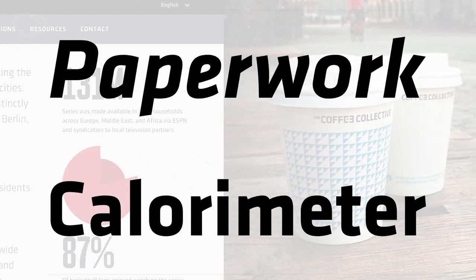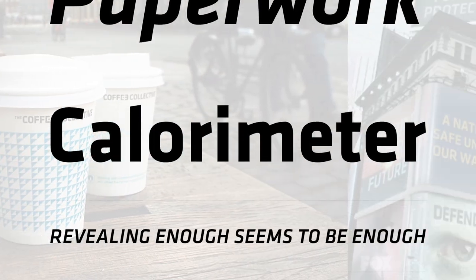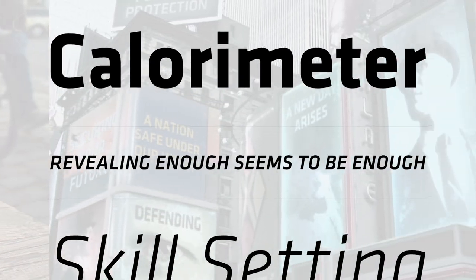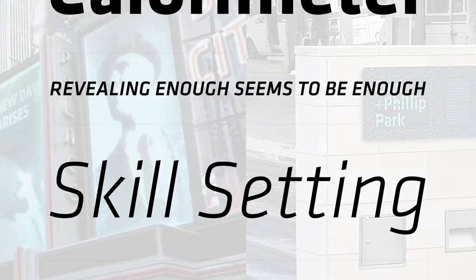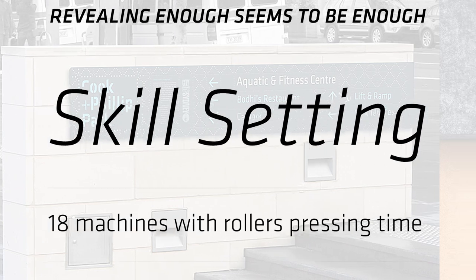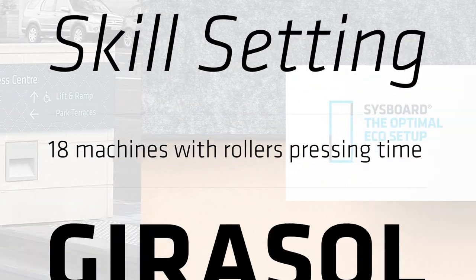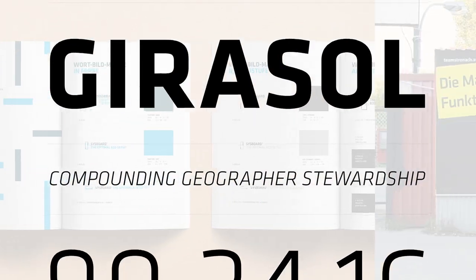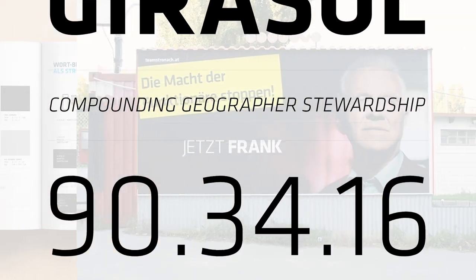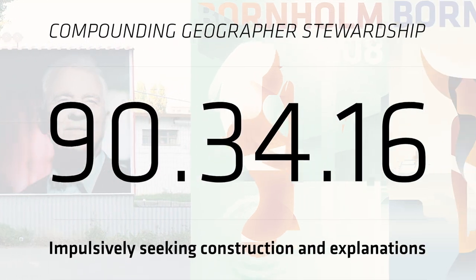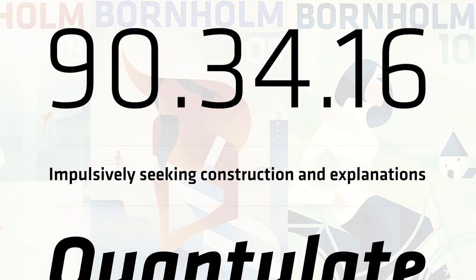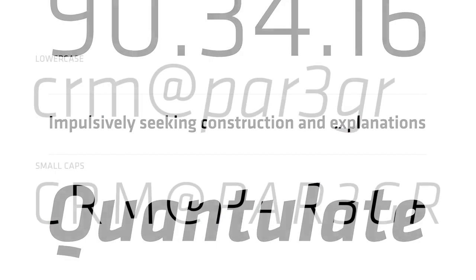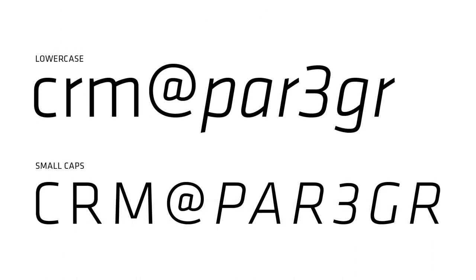Let's delve deeper into the design philosophy that makes Klavika a true standout. Since its introduction in 2004, Klavika has seamlessly transcended the realms of print and pixels, showcasing its adaptability across a wide range of media. Process Type Foundry ensured that Klavika is not only extensive, but also thoughtfully designed, with a broad spectrum of typographic features. Special attention has been given to small caps, crucial for setting acronyms and initials, as well as excelling in titling and display work.